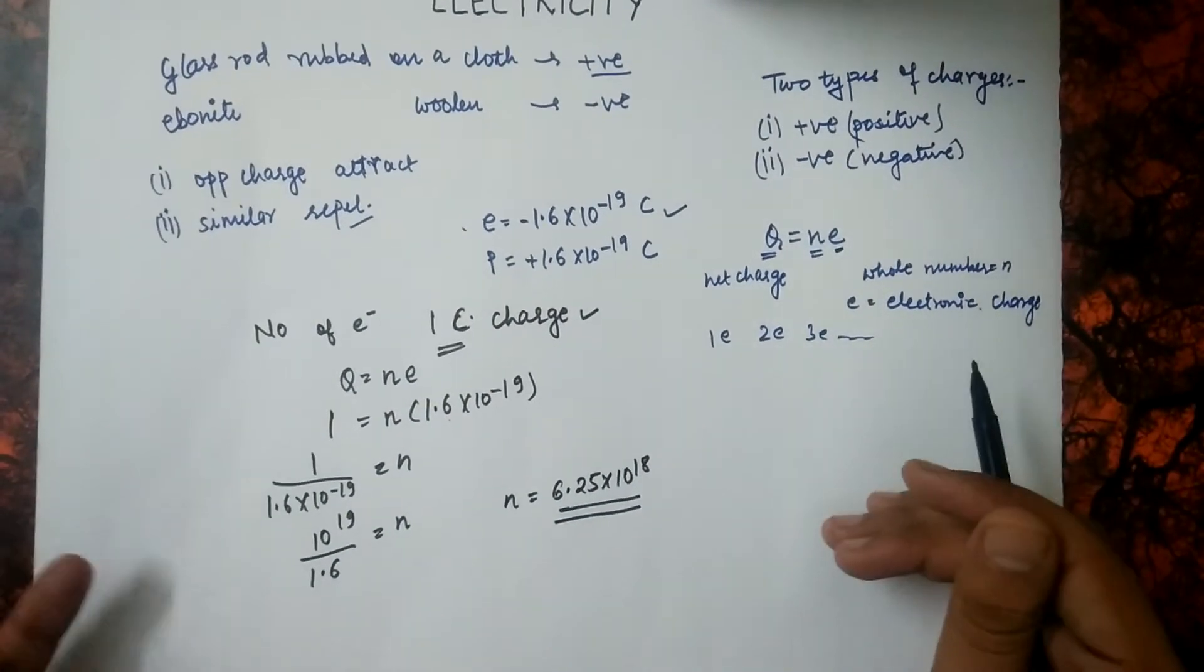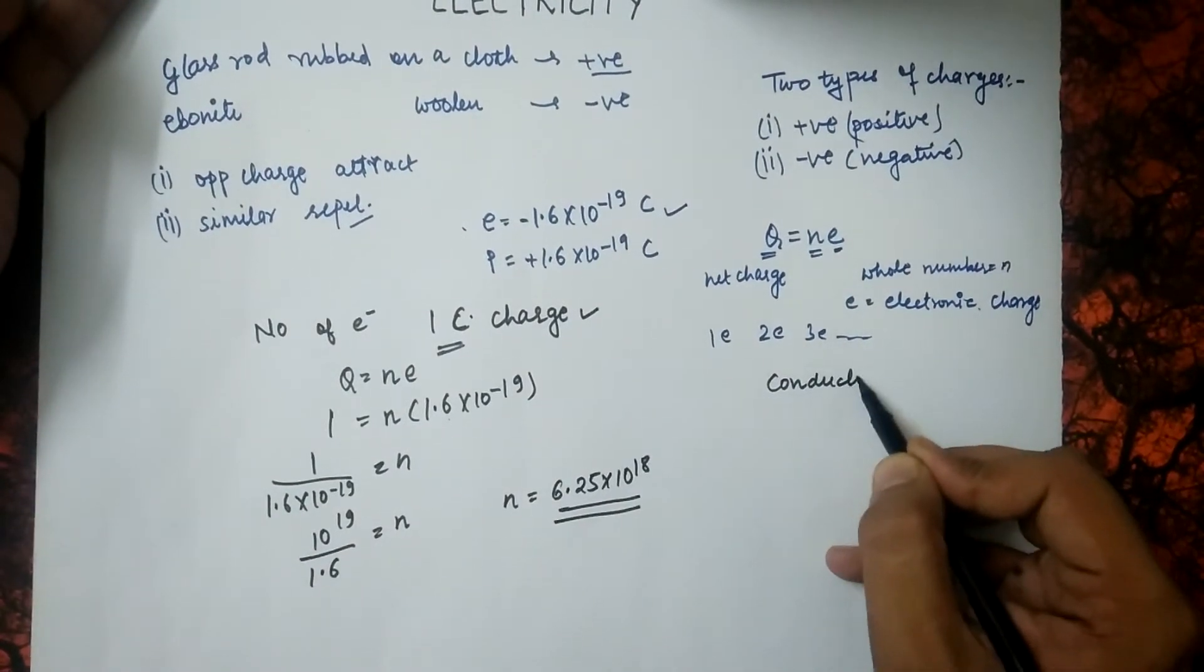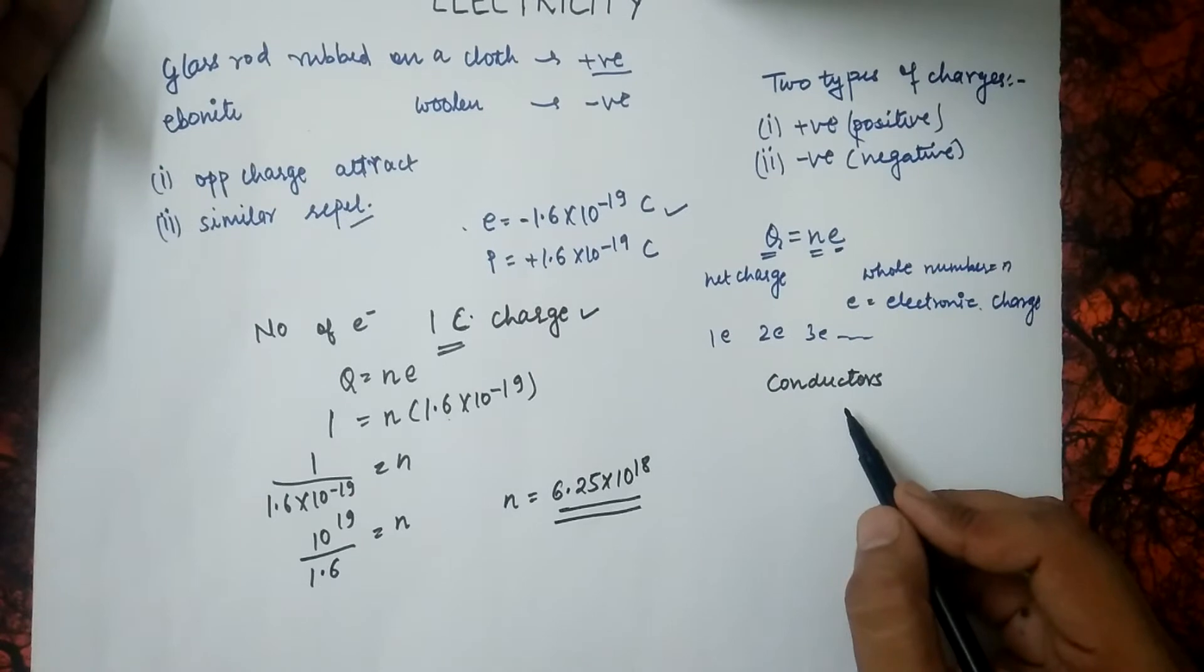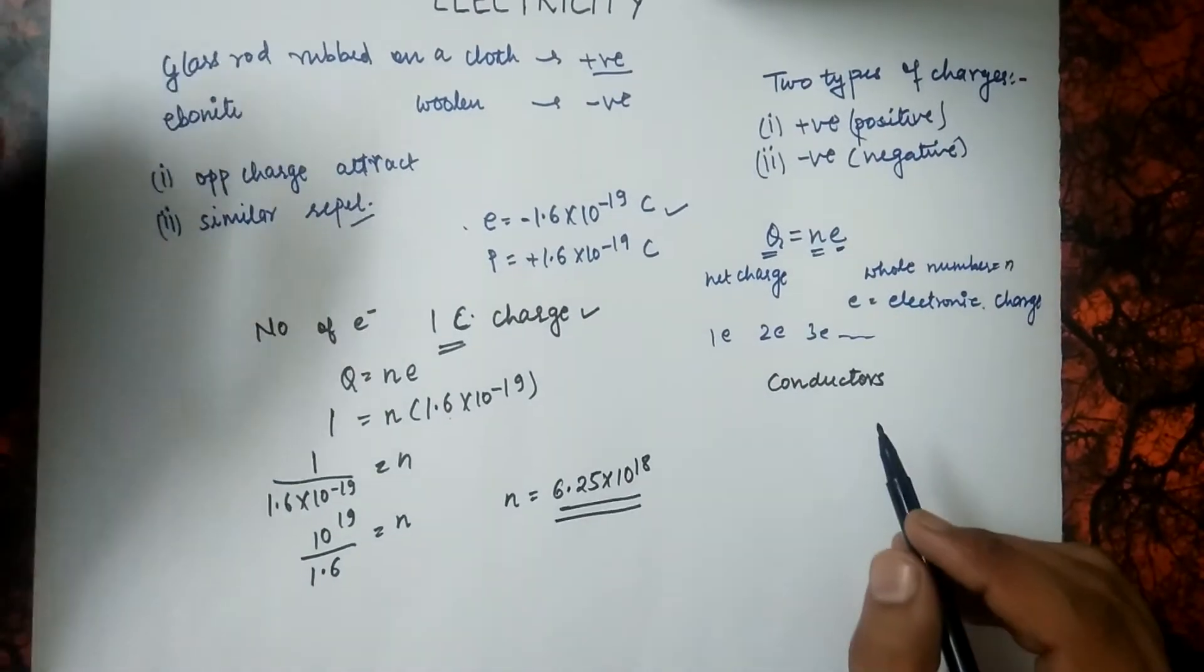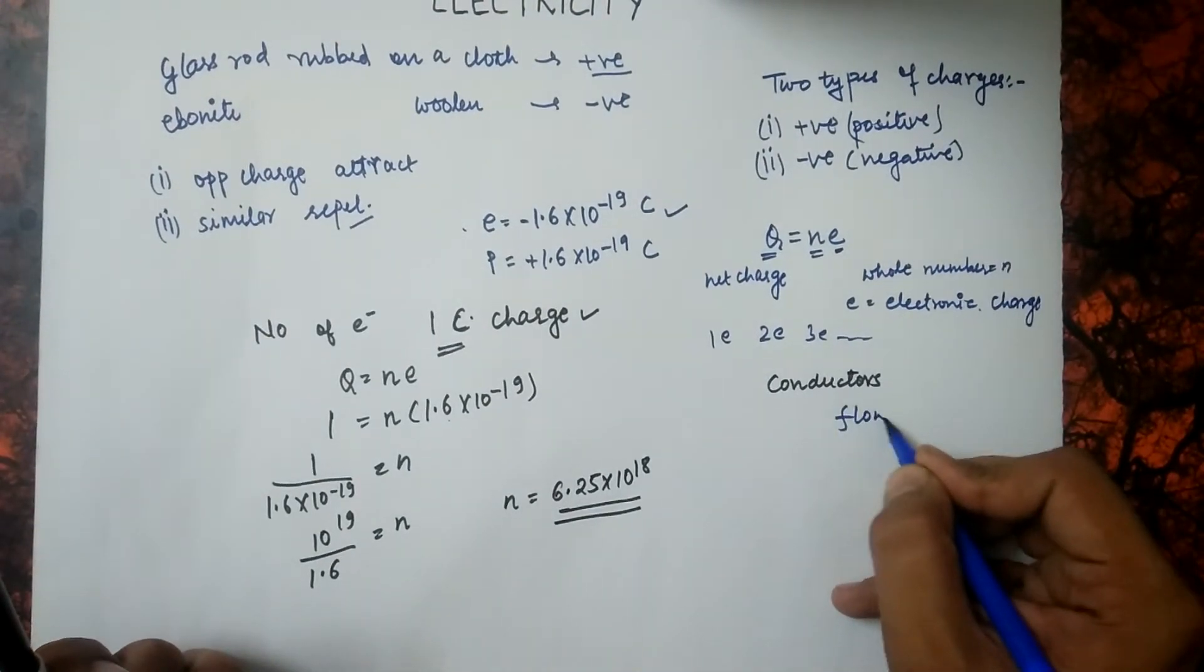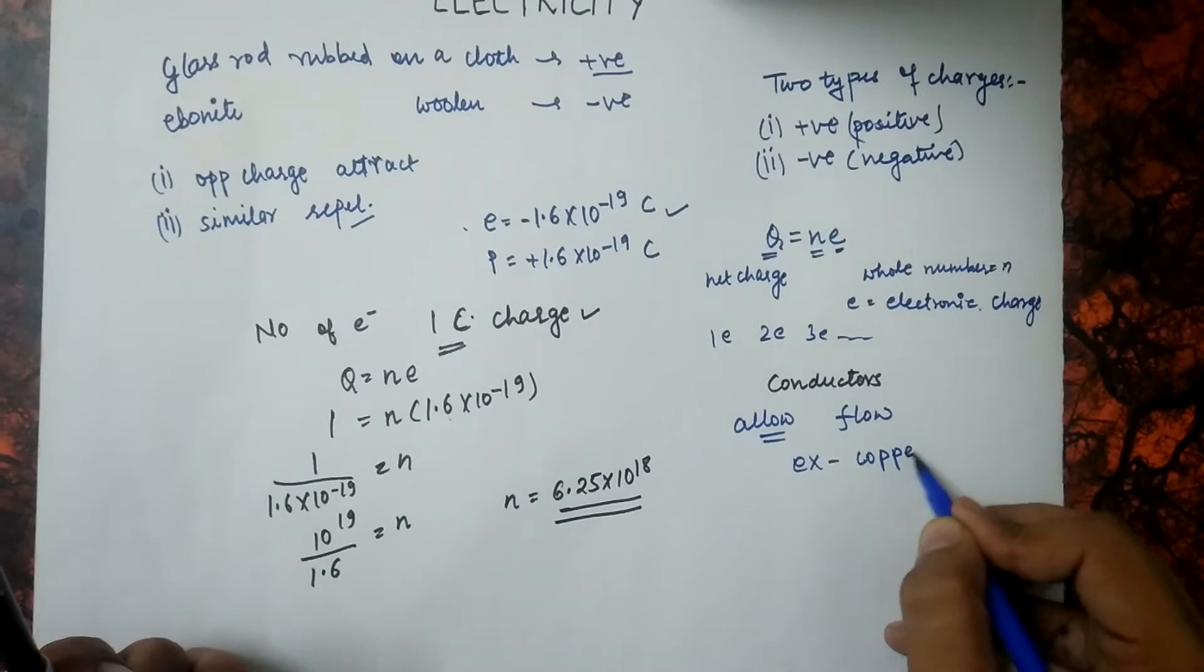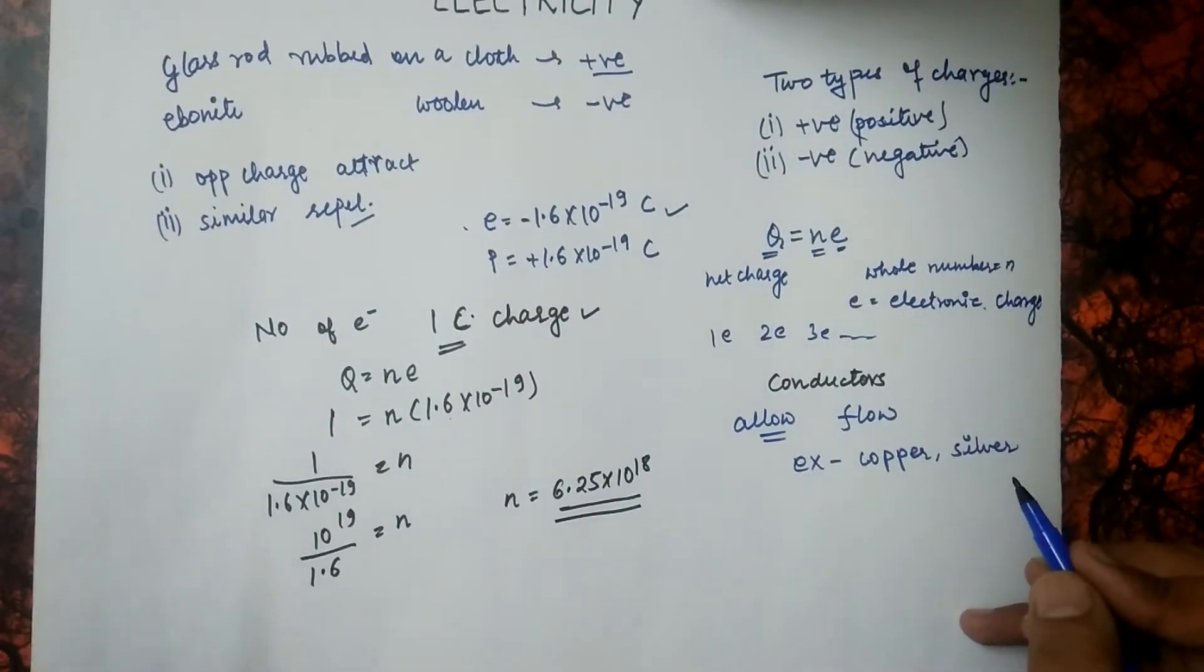Now, the next topic which we are going to see is conductors. What are conductors? Conductors are the substances which conduct electricity through them. That means they allow the flow through them. Examples include copper, silver, etc.